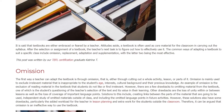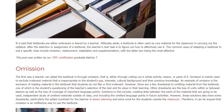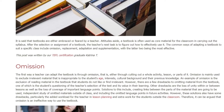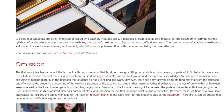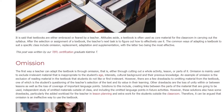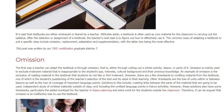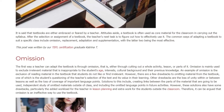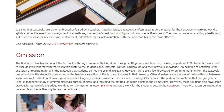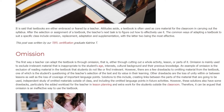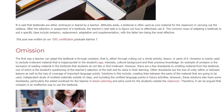An example of omission is the exclusion of reading material in the textbook that students do not like or find irrelevant. However, there are a few drawbacks to omitting material from the textbook, one of which is the student's questioning of the teacher's selection of the text and its value in their learning.